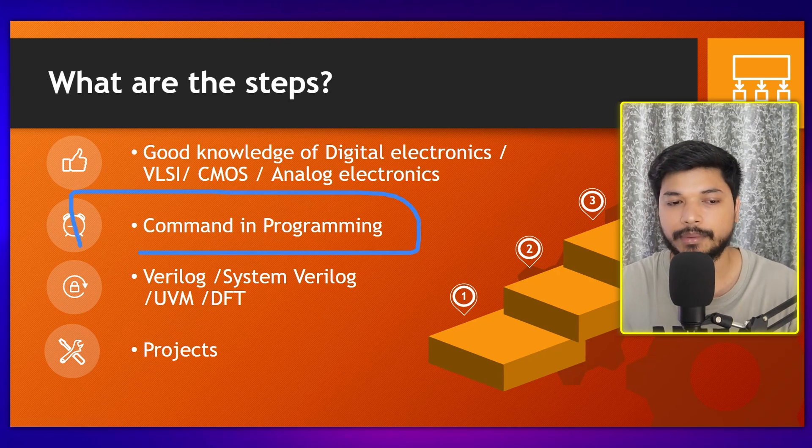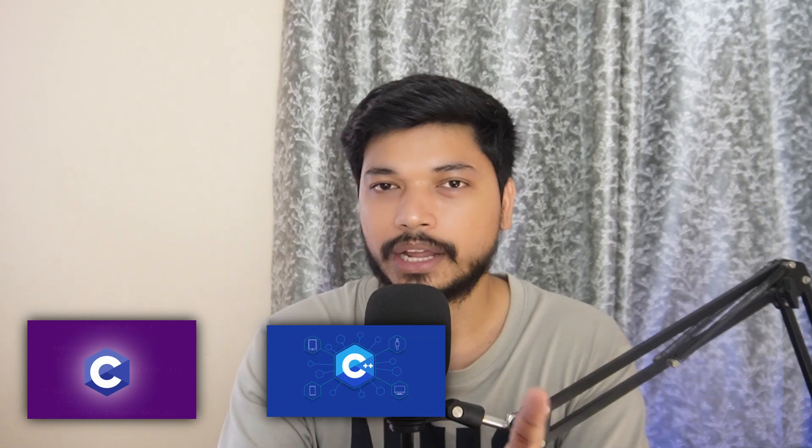Whether you are a first-year, final-year, or just graduated student, you can learn digital electronics from YouTube. You can also refer to NPTEL lectures for CMOS and analog subjects. For programming, C is very important and C++ is excellent to have. Python is useful for scripting but not mandatory — for scripting we also have TCL and Perl. Basic C and C++ knowledge is sufficient for the programming requirement.